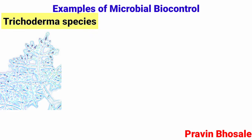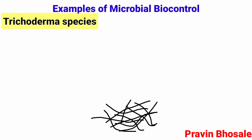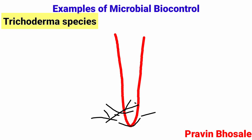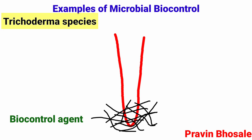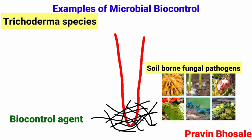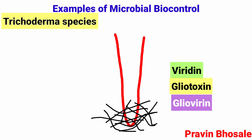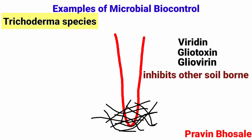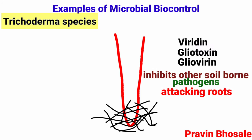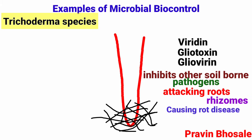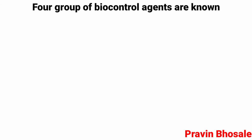Second example is Trichoderma species. They are free-living fungi found in the root ecosystem, the rhizosphere. These are effective biocontrol agents of several soil-borne fungal plant pathogens. The fungus produces substances like viridine, gliotoxin, and gliovirin that inhibit other soil-borne pathogens attacking roots and rhizomes, causing rot disease.